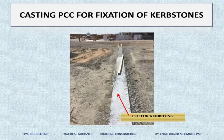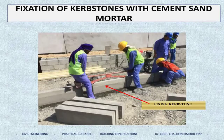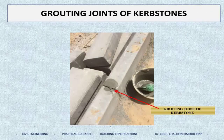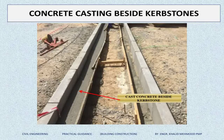Practically, this first photograph shows the casting of PCC for the fixation of the curbstone. Here you can see we are fixing the curbstone above PCC with cement sand mortar. After fixing the curbstones, there are joints between them which we fill by grouting.